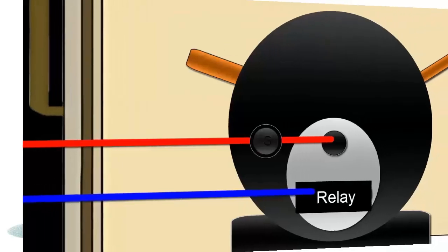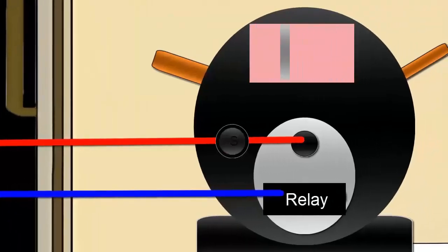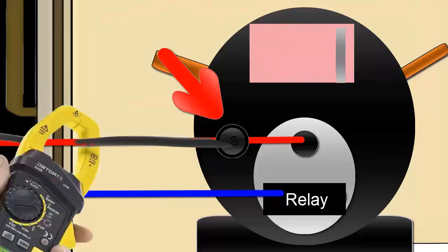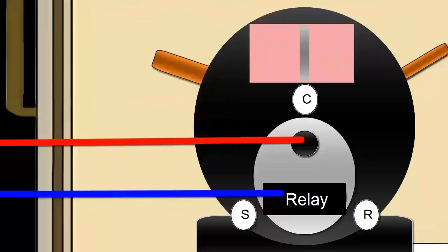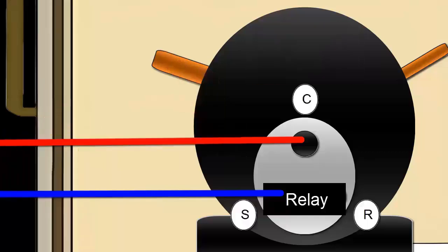4. Faulty thermal protector. A defective thermal switch may accidentally disconnect the compressor. To check, remove the thermal protector connected to the common pin of conventional compressors. Connect the power wire directly to the common pin temporarily and see if the issue resolves.